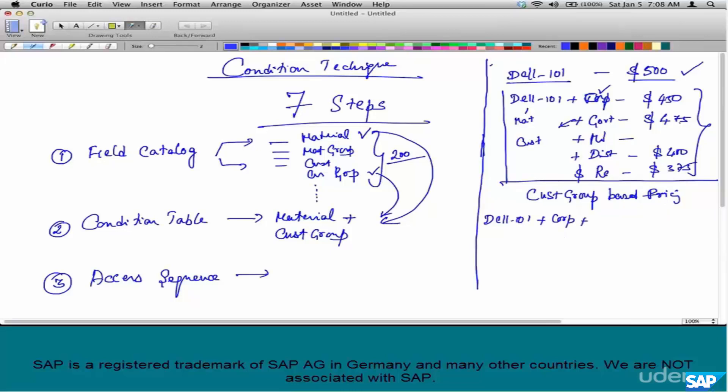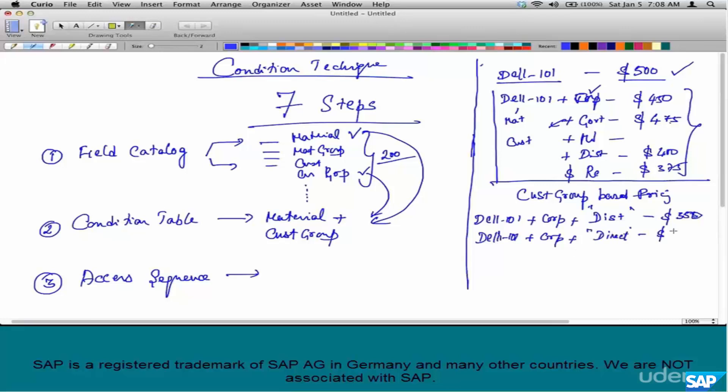The same material, if you are selling to a corporate through a distributor, this is the distribution channel. You can sell directly to a corporate. The price is $350. But if you are selling direct to a corporate, it's $300. This right here is not a customer group. This is the distribution channel, enterprise structure element, not customer group.